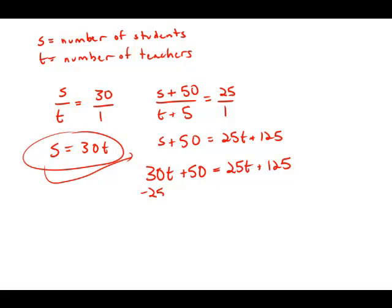I'm going to subtract 25T from both sides. 5T plus 50 equals 125. I'm going to subtract 50 from both sides. 5T equals 75.